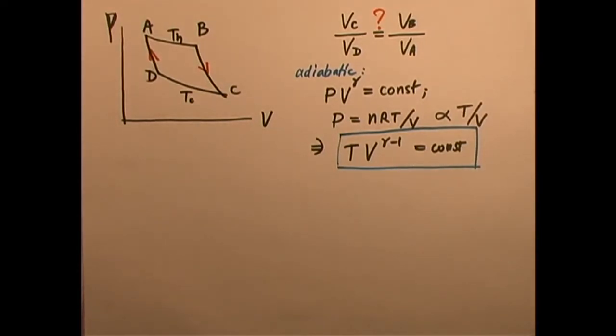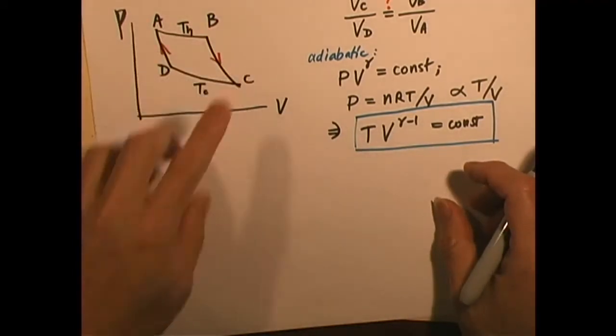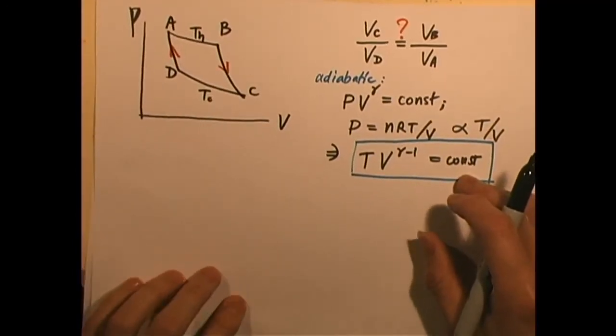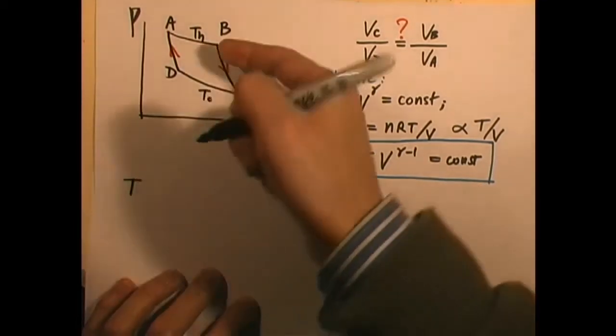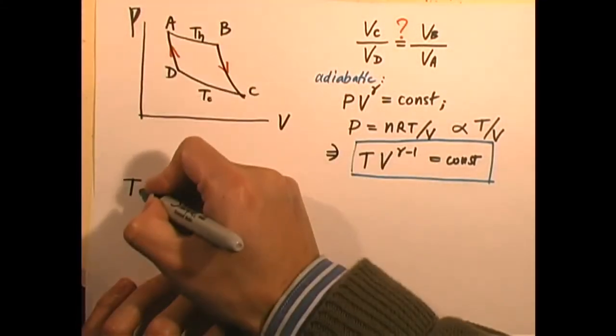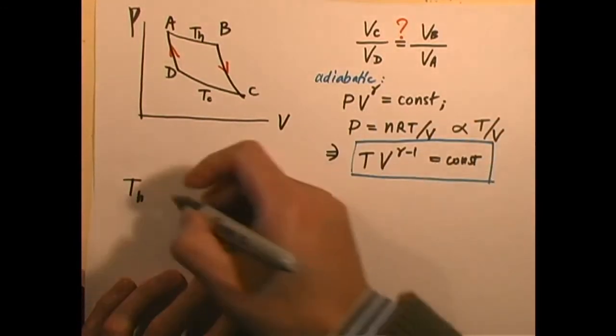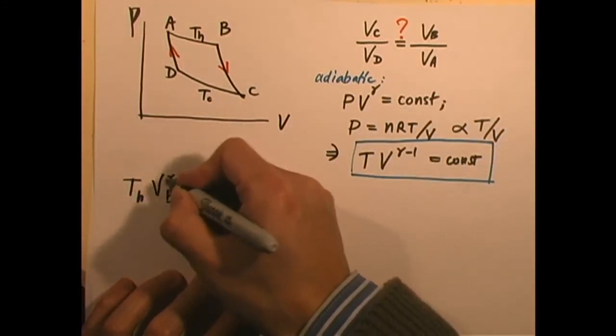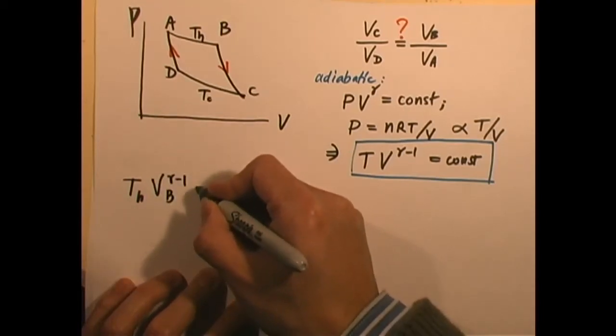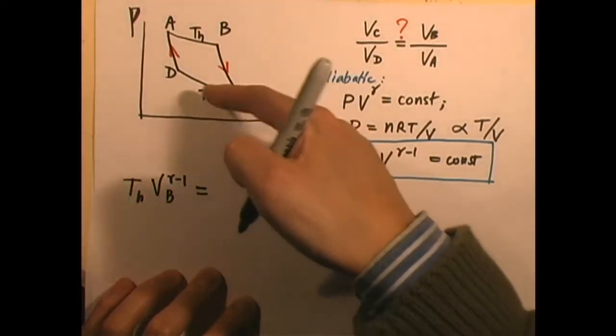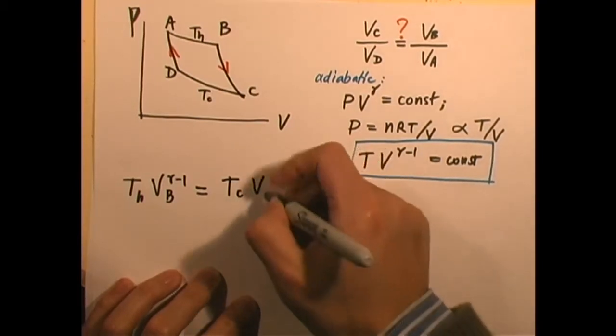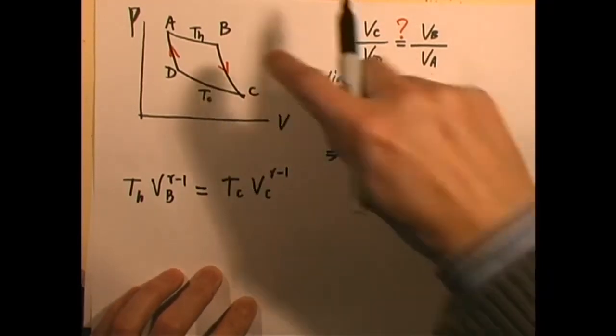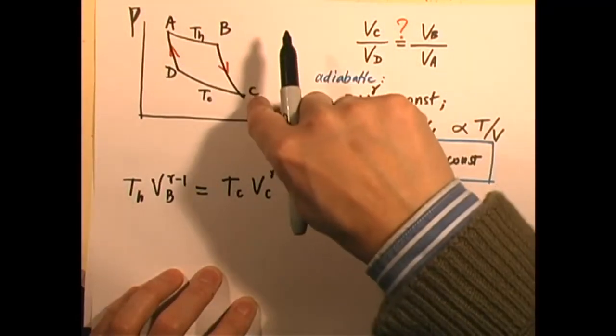Okay, so now let us use that equation to link points B and C because they are on the same adiabatic line. So I have Th, and Vb to the power of gamma minus one. That's going to equal to Tc, Vc, gamma minus one. That's for B and C. They're on the same adiabatic line.